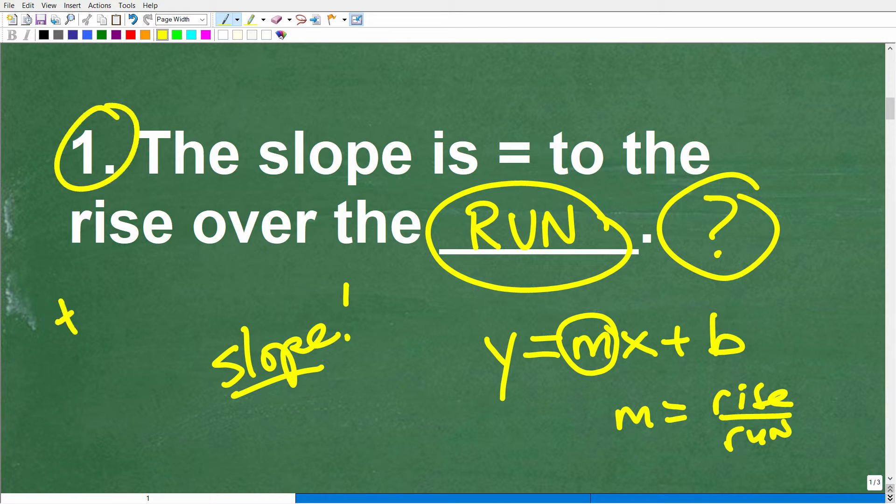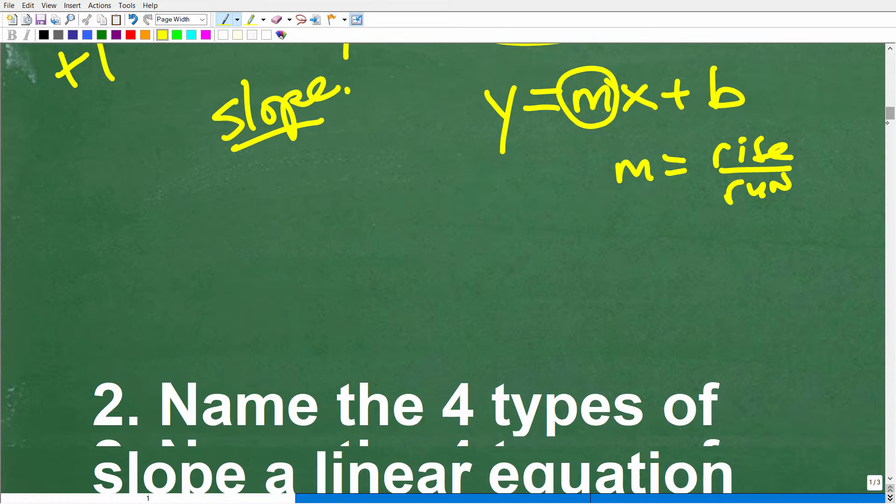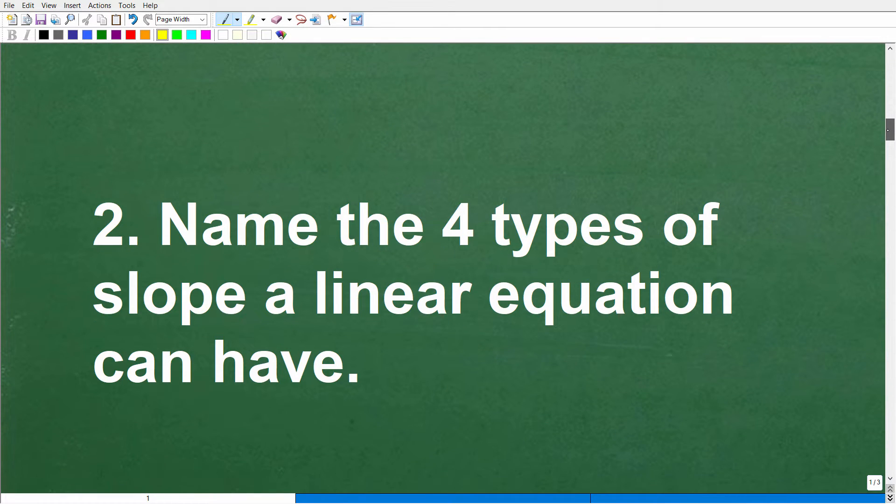So if you got this right, that is plus one. Let's move on to this second question. Name the four types of slope a linear equation can have. So here you're going to get one point for each correct response. Again, we're looking for four types. So let's get into the answer for this question.